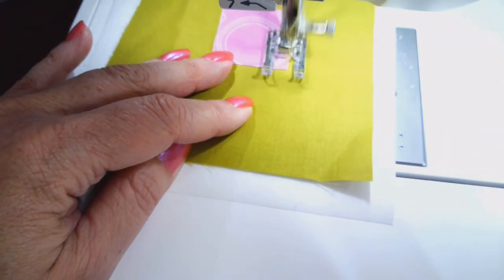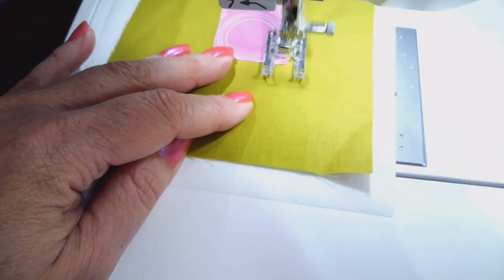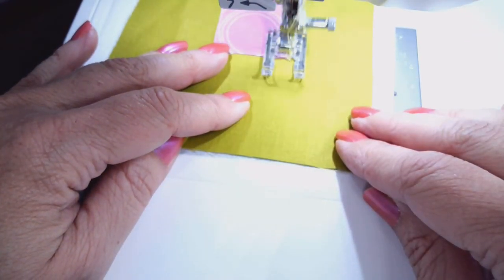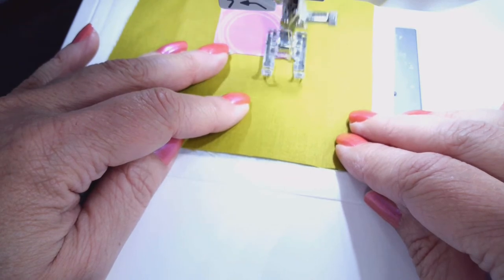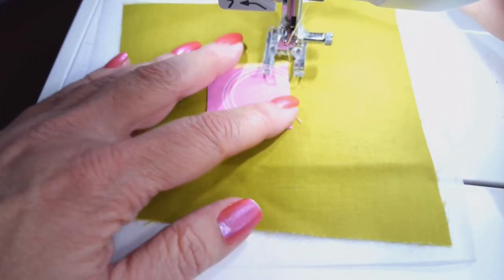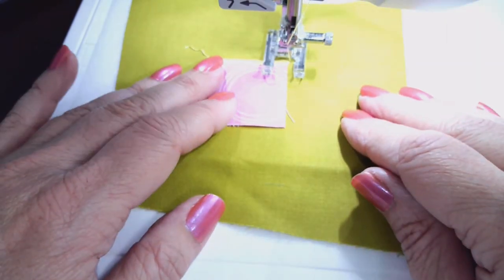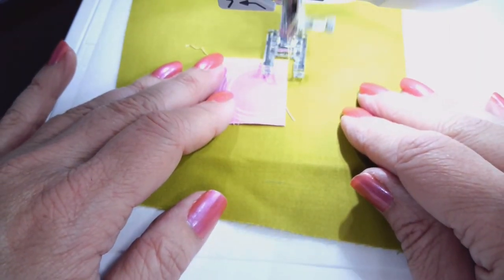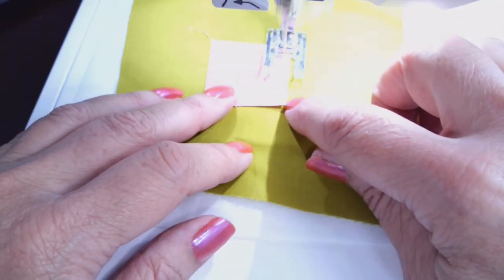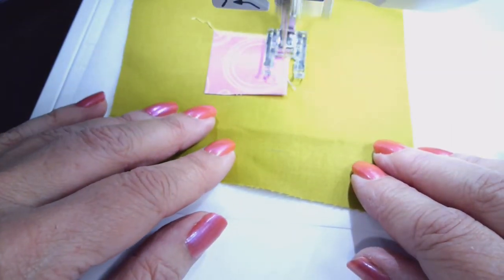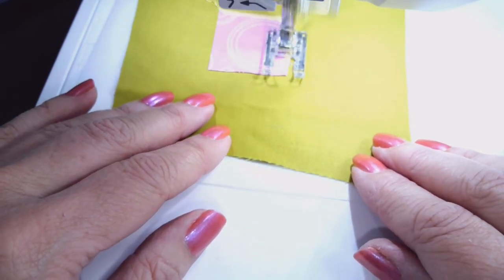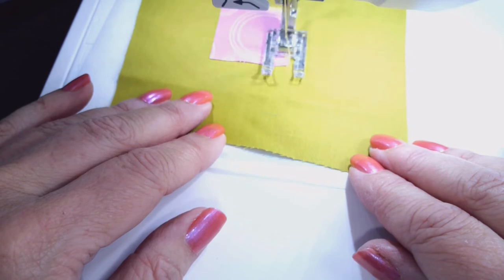When I get to the other end, I'm going to have the machine taper back down. I can turn my corner. And as I come back up this side now, it's going to taper back up, making that nice mitered corner. And now it has memorized the length of my center section of my satin stitch, and it will automatically taper down as we get to the end again.